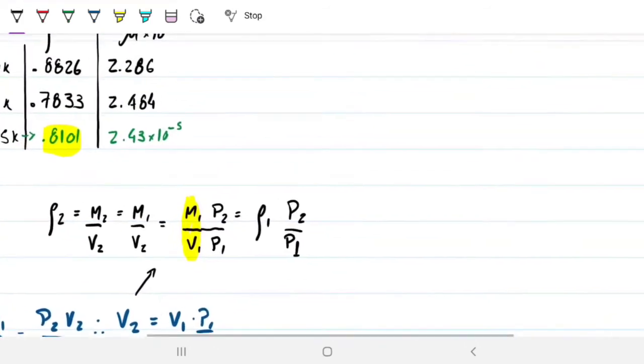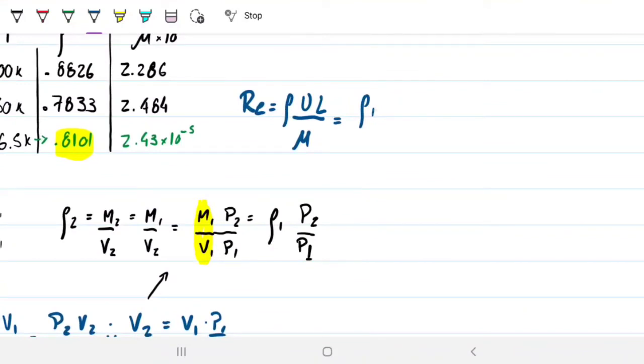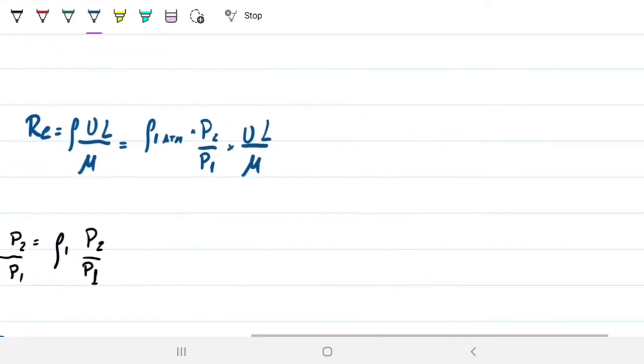So what I'm going to do is, let's go ahead and write our Reynolds here. Let's do that in blue. So my Reynolds is density, velocity, characteristic length, and viscosity. So in this case here, I'll change the density for my density 1, or let's just put density at 1 atmosphere so it's not confusing. 1 atm. Then velocity, and then pressures. Times pressure 2 over pressure 1, times my velocity, characteristic length, and dynamic viscosity. We have everything. So let's plug in.